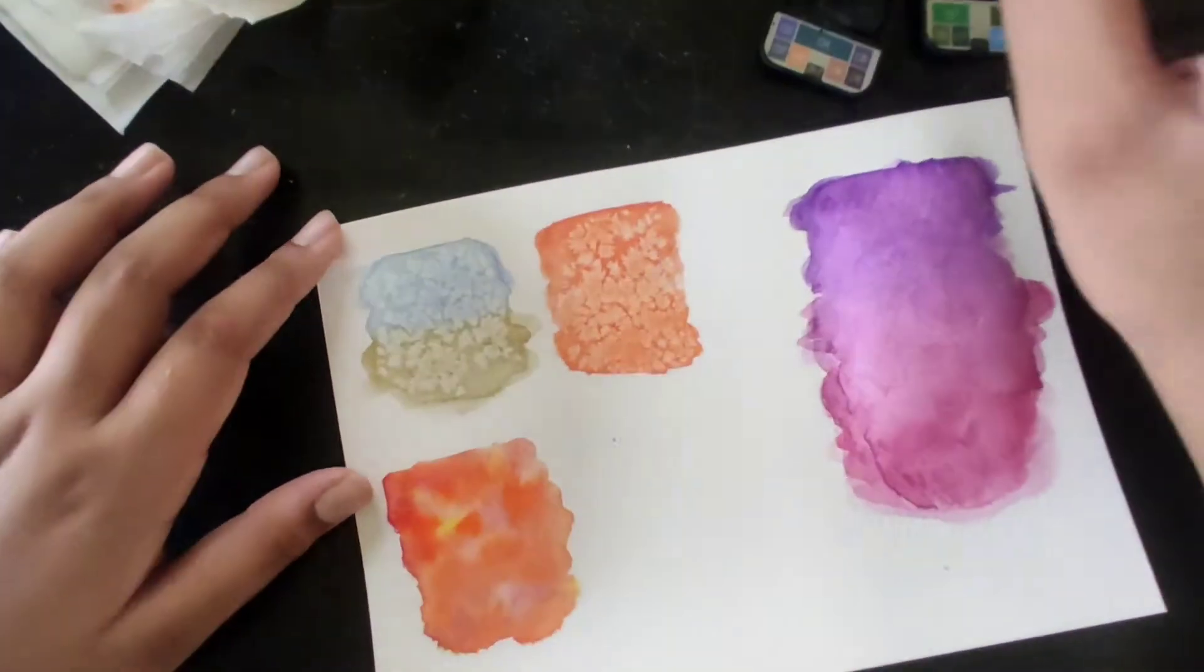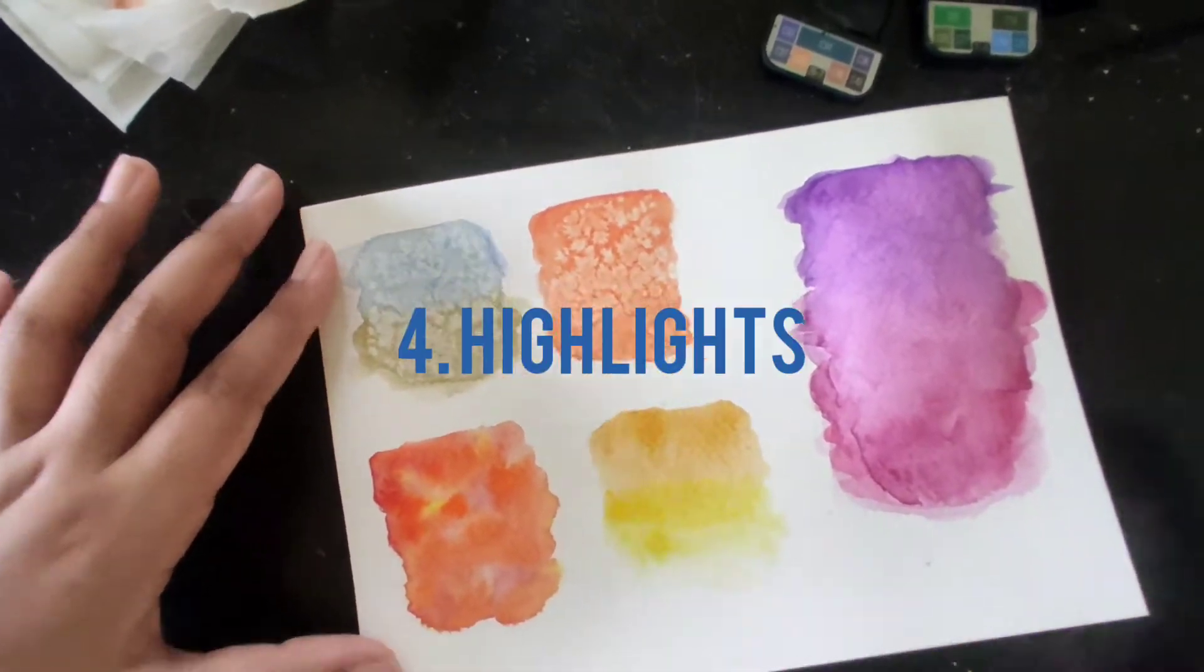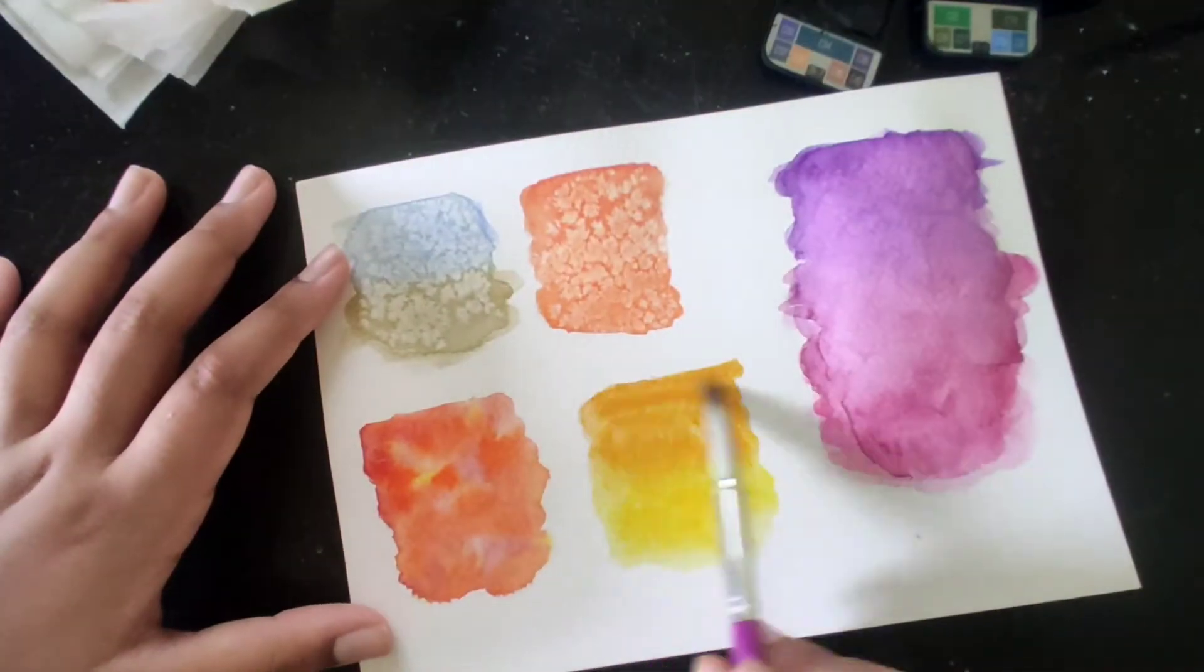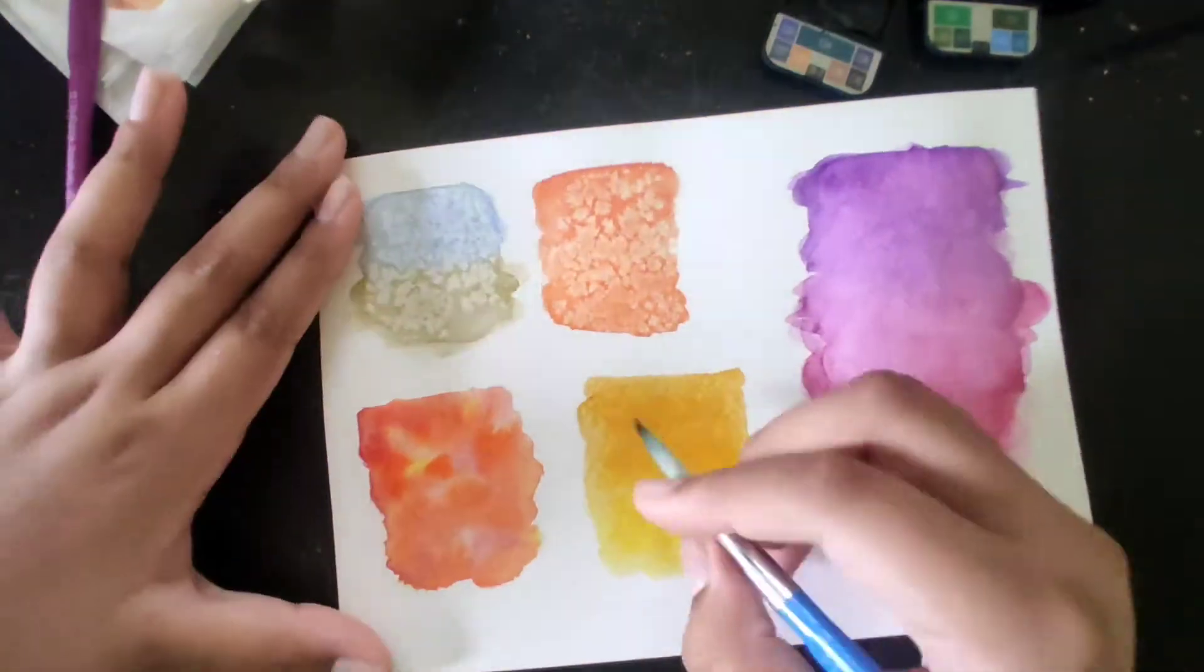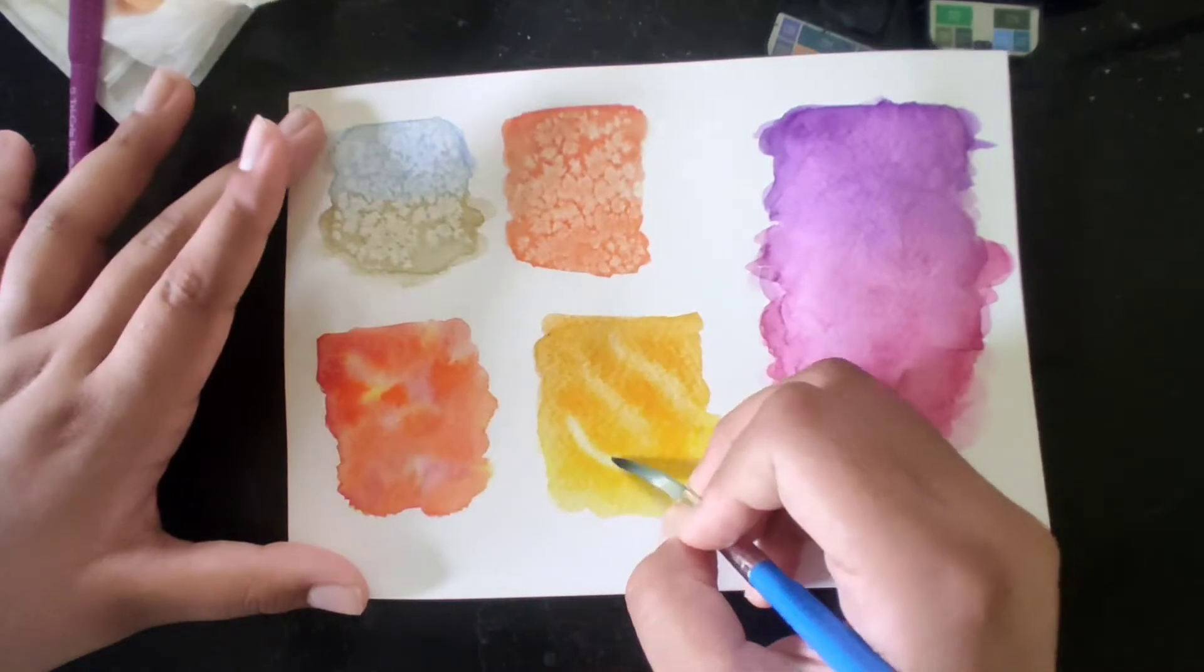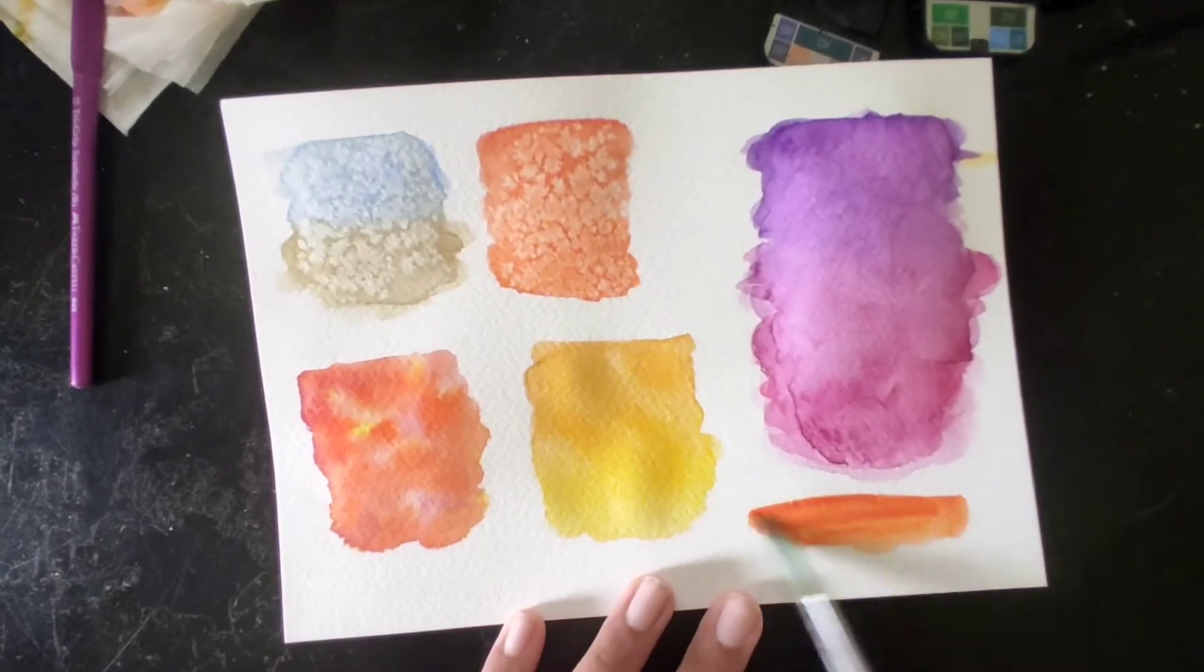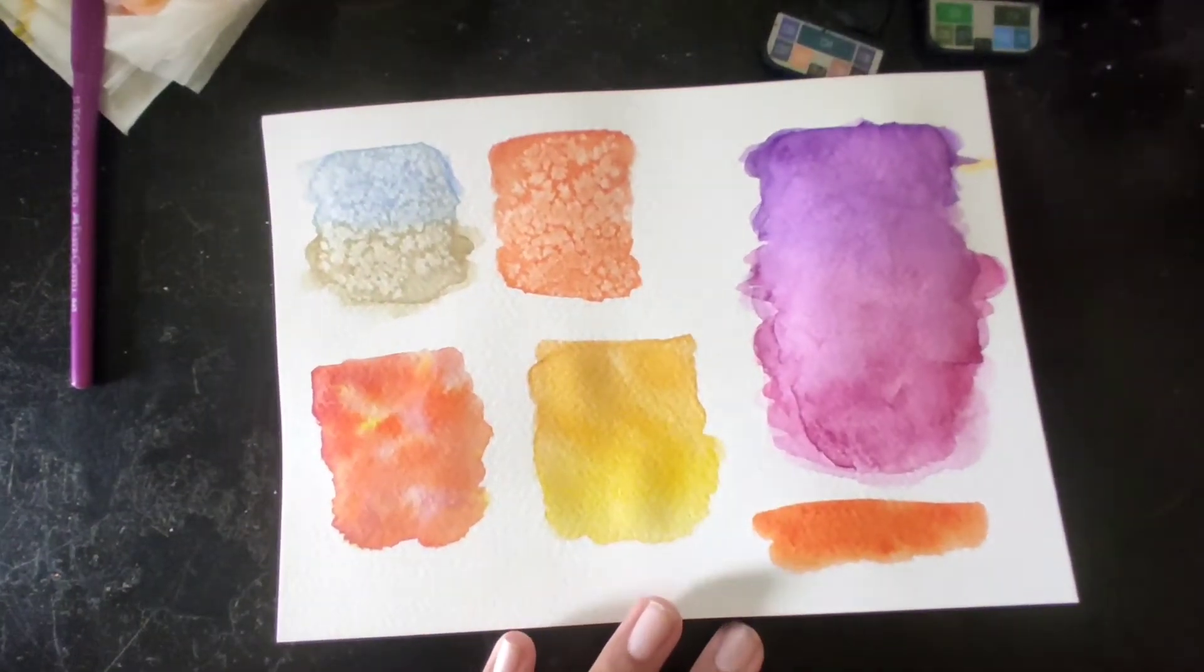Now the last and final effect is highlights. I'll be showing you two ways to do highlights. One, I'll be using a damp wet brush. Some people think that adding highlights you will definitely need white watercolor paint, but it does not work. So instead of using white watercolor paint, you could just use a damp brush to lift up some paint so it creates white areas and that creates highlights.